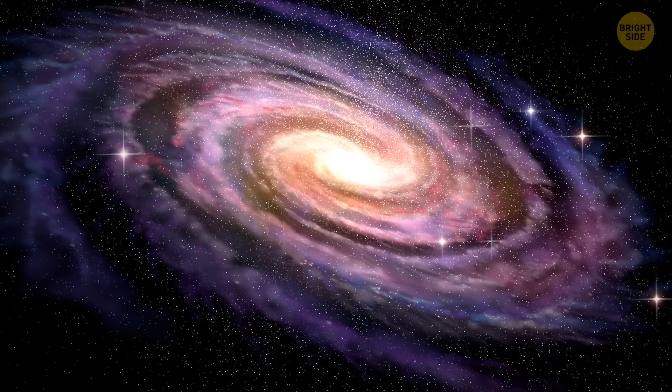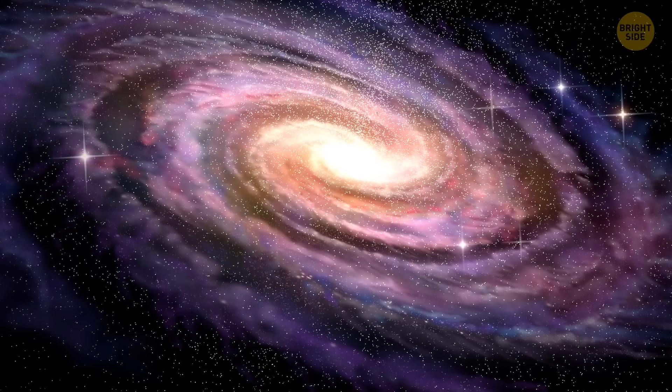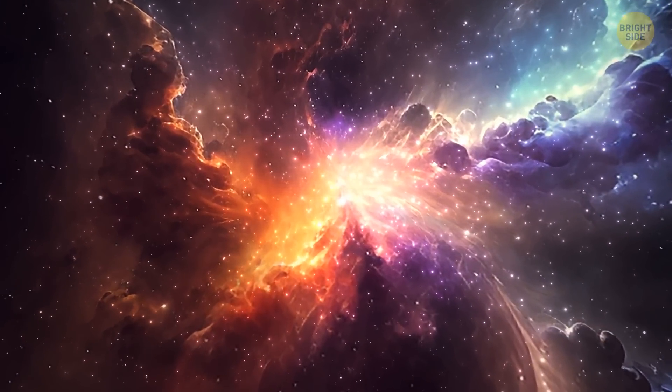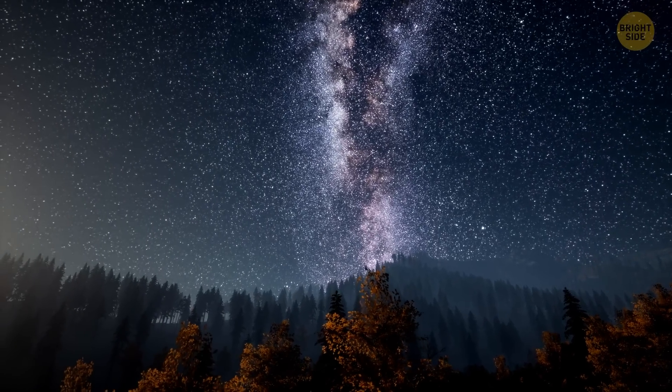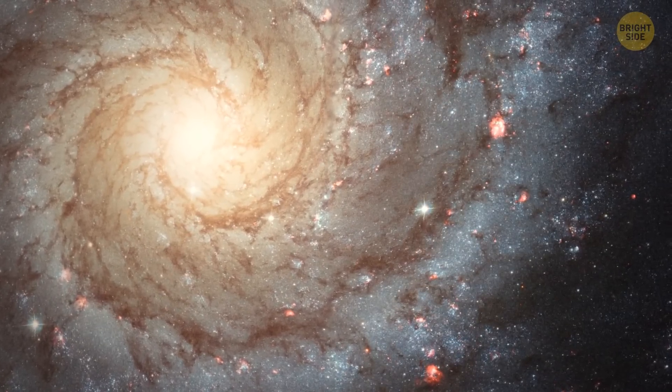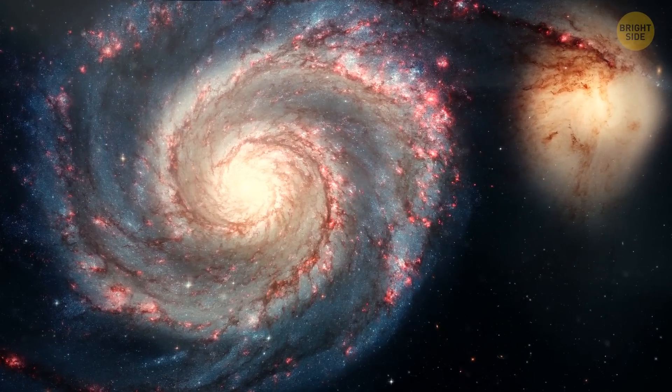This disk is like a giant pancake 100,000 light years across and 1,000 light years thick. It's full of dust, gas and stars. It's what we look at when we look up at the sky at night. The stars in this pancake disk orbit around the center of the Milky Way and form four swirling streams that are called spiral arms.